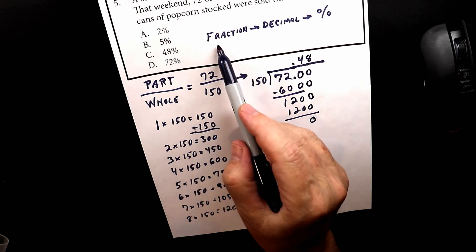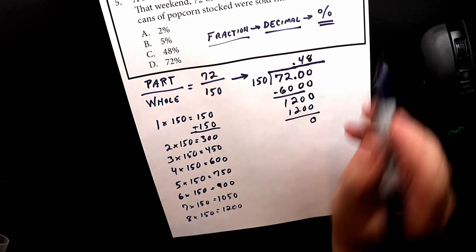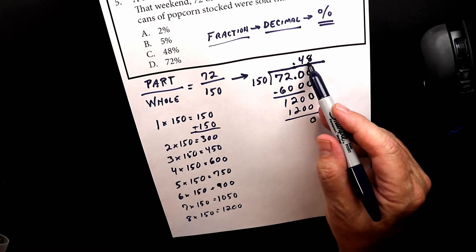Now, so we figured out the fraction. We figured out the decimal. Now the last thing is the percentage. So we have 0.48.